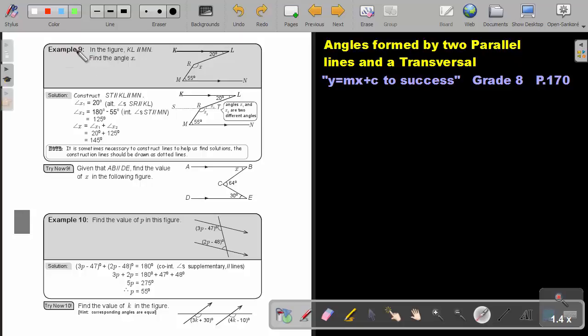Now, let's look at example 9. In the figure, KL is parallel to MN. Find the angle X. The problem is that there is not a parallel line here. So, let's read the note. It is sometimes necessary to construct lines to help us find solutions. The construction lines should be drawn as dotted lines. If I put in an extra line just to show that it's an extra line, I just make a dotted line.